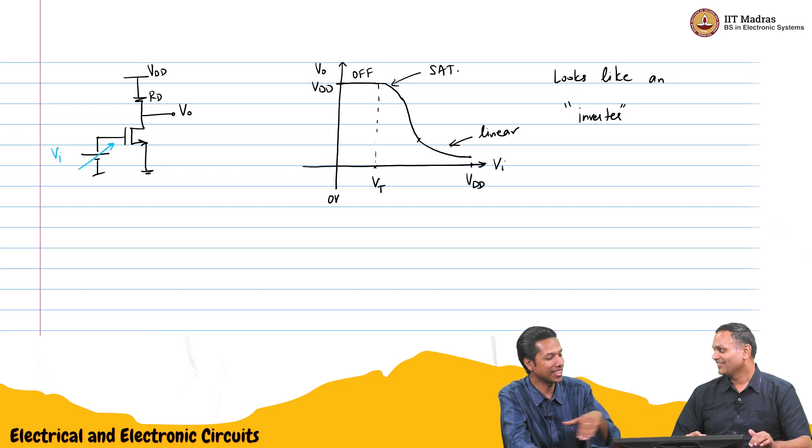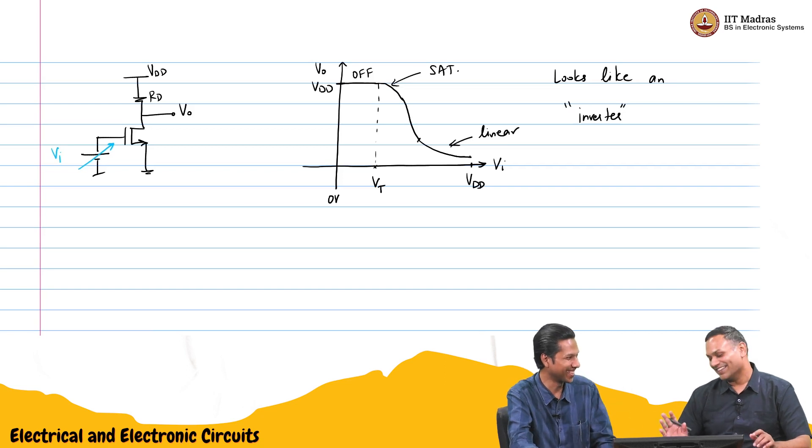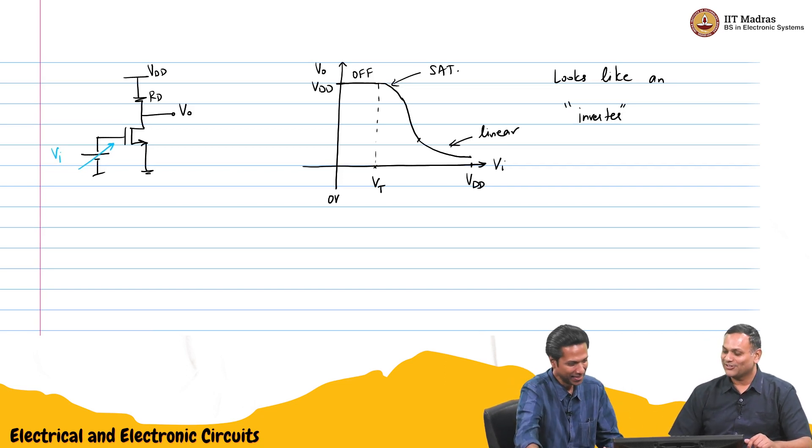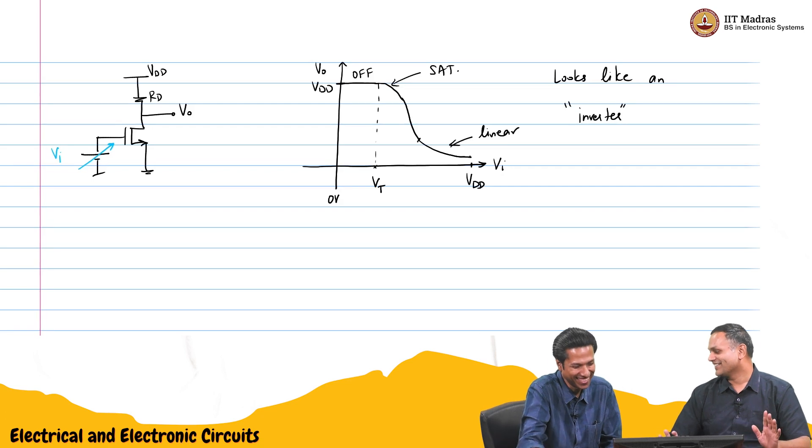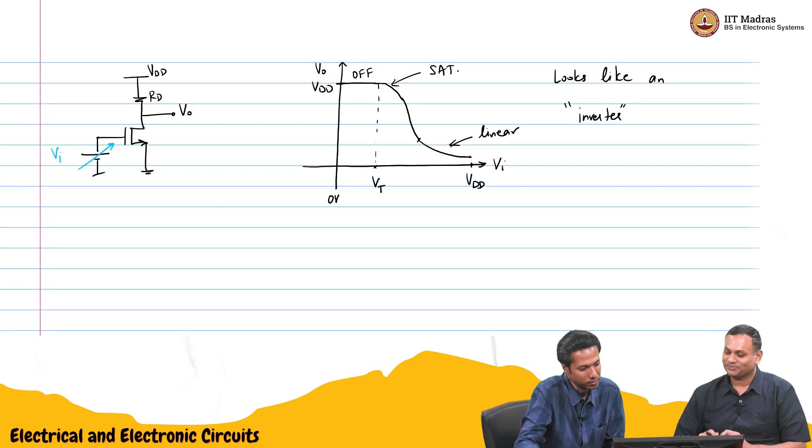Because I would like to get low side also flat. I agree. That is why I said it looks like an inverter. It is not a very good inverter. Because we want 0. That will be nice. But I think they will probably learn that in a future course. Maybe out of scope for this course. This point at which it enters into linear, we can write equations and get it. Vgs minus Vt, Vdd minus IdRd. Wherever they match, that point.